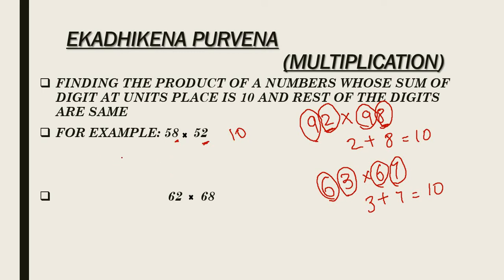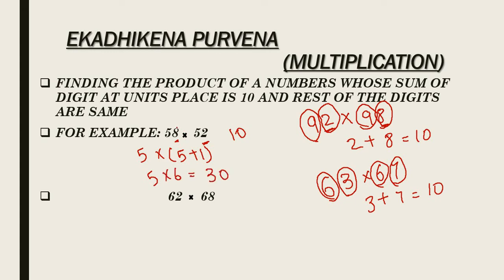What you have to simply do is multiply 5 with the number 1 more than 5, that is 5 into 5 plus 1, that is 5 into 6, which equals 30. And you have to directly multiply 8 with 2, which comes to 16. So the answer is 3016.